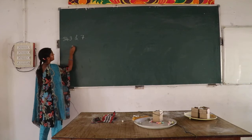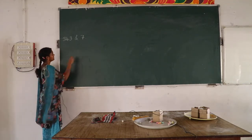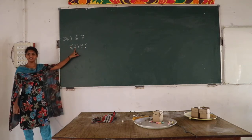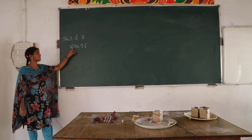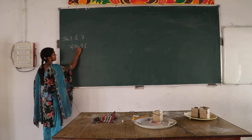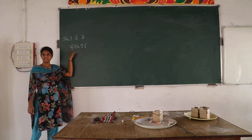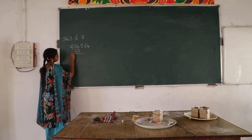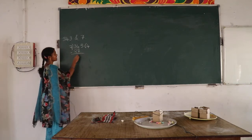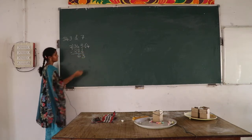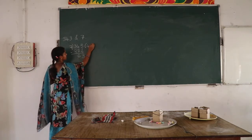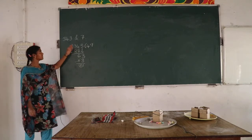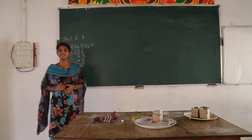Now I am using the division method. Here 343 is bigger than 7, that's why I am taking 343 as a dividend and 7 as divisor. What is the first digit? 3. 3 is less than 7, so 3 is not divisible by 7. Now I take two digits: 34. 34 is bigger than 7. How many 7's are in 34? 4. 4×7=28. Now I do subtraction. Remainder is 6. Now I carry 3. How many 7's are in 63? 9. Remainder is 0. So 343 is divisible by 7. This is one process of solving this type of problem.